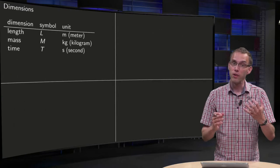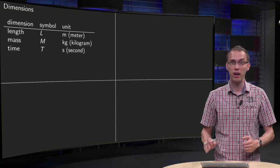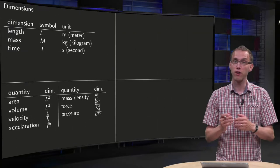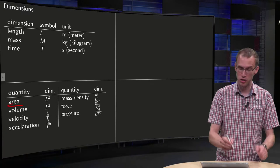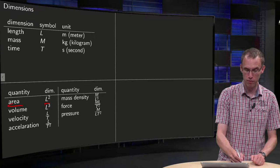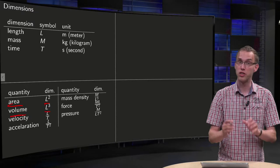And then we can see how we can derive other dimensions from those. For example, if you have areas, then the dimension is just L squared and similarly if you are talking about volume, your dimension is just L cubed.